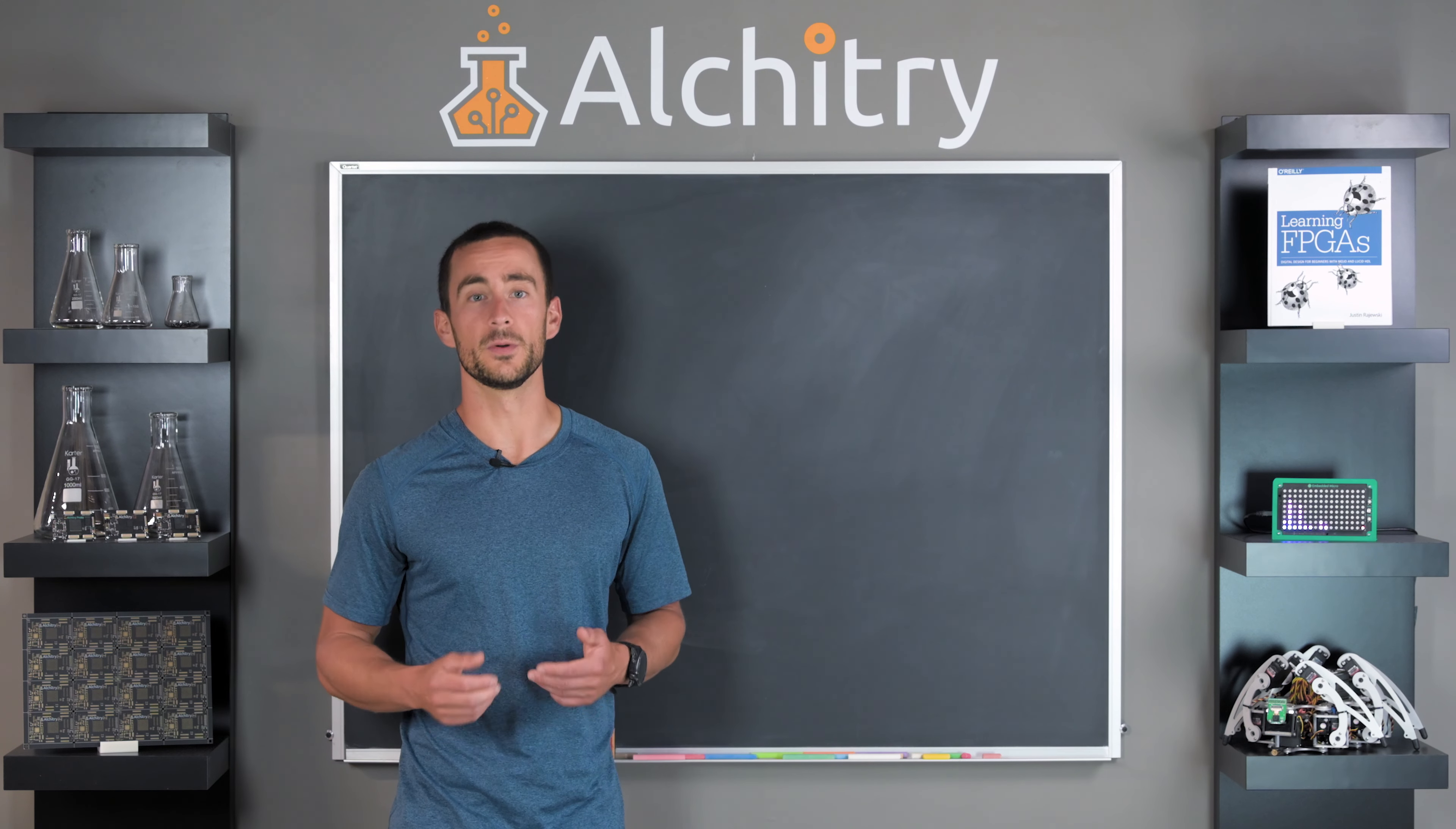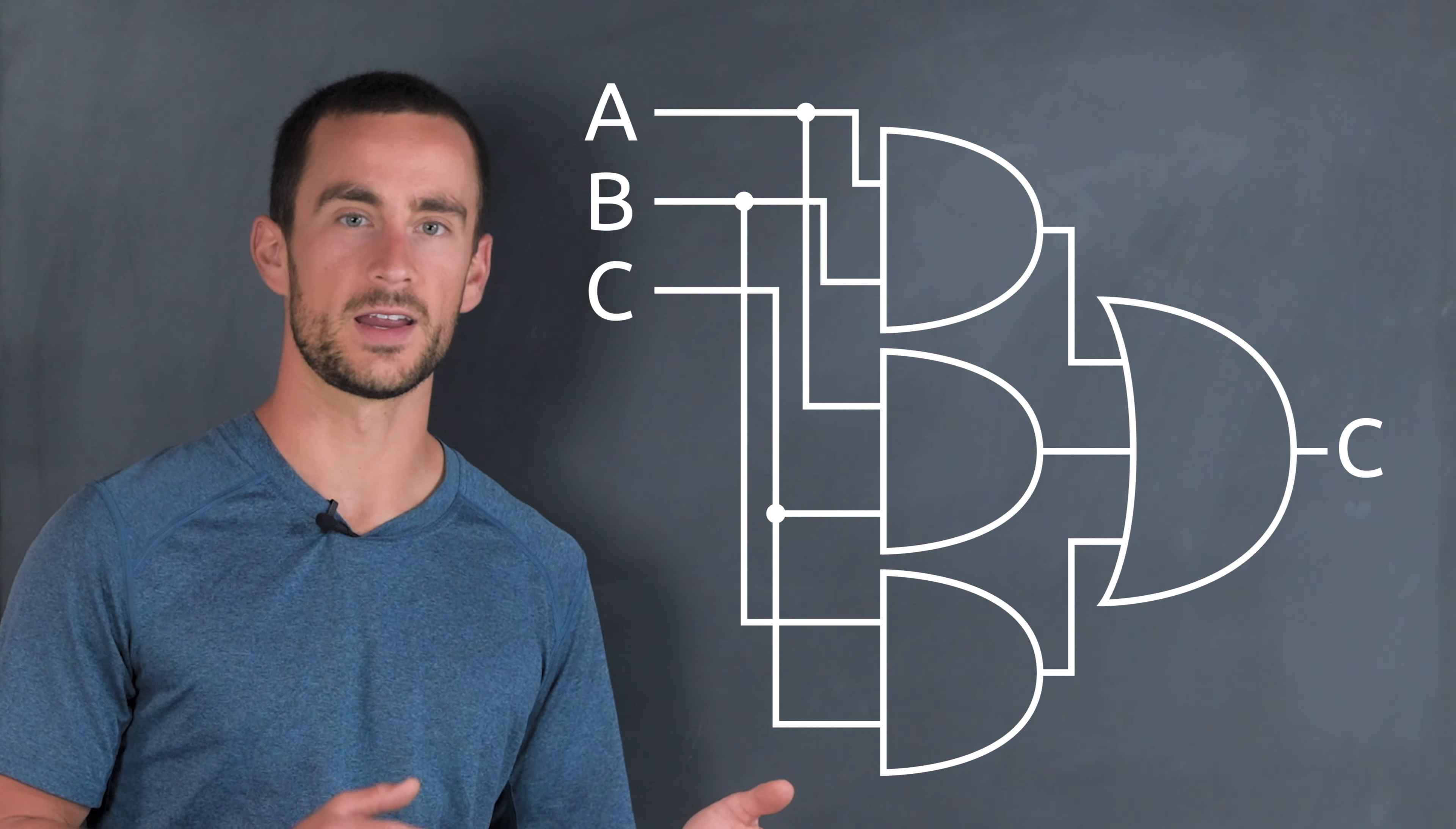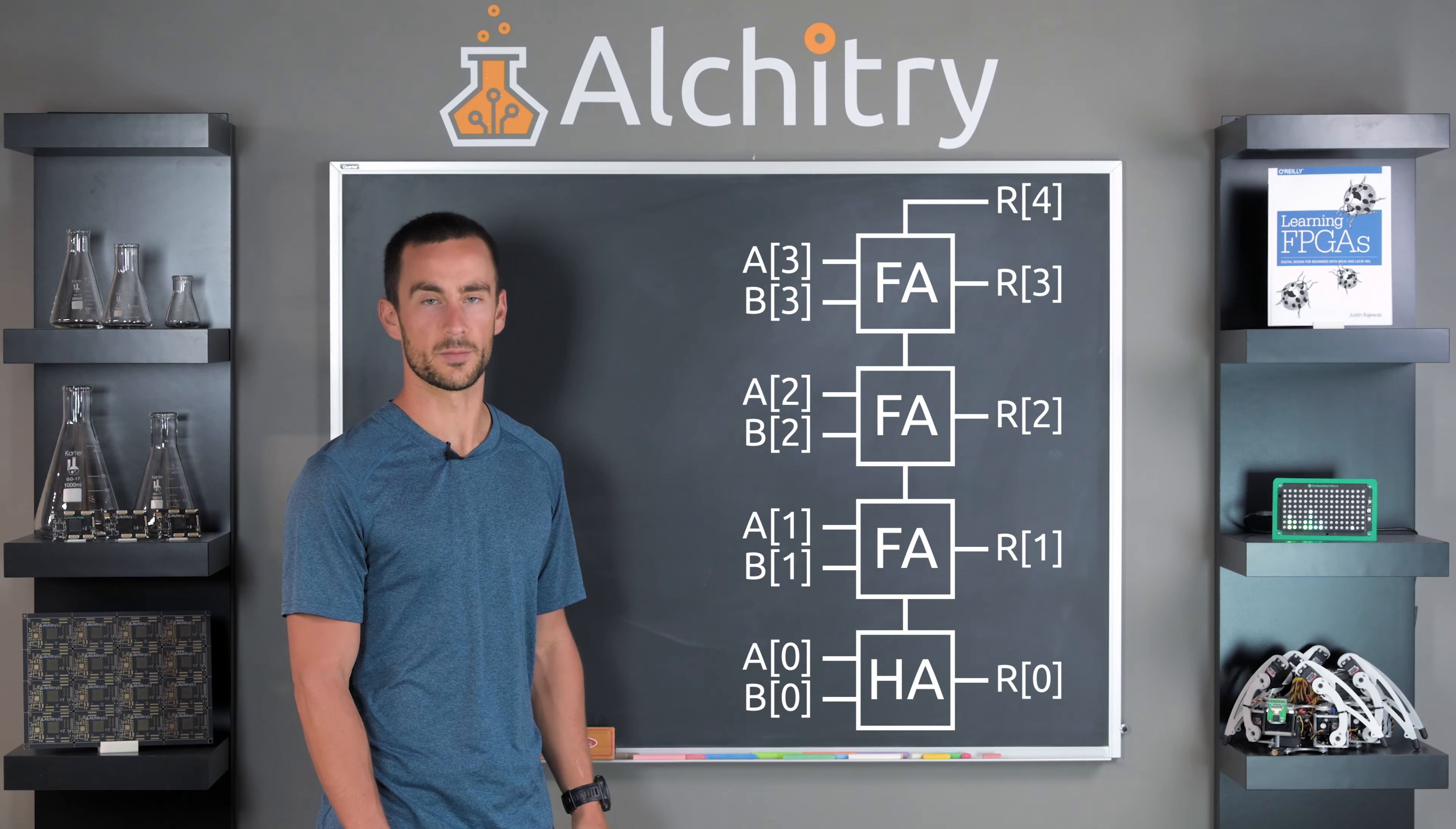Alright, now we have the result bit, but we need to update the carry bit. In other words, when will the value overflow? When any two bits are 1. So if A and B are 1, or A and the carry bit are 1, or B and the carry bit are 1. There we go. Now we have a full adder. We can take this little block and copy and paste it a few times so that we can add multibit numbers together.